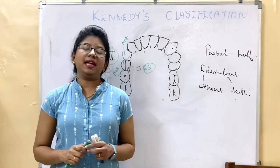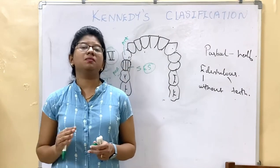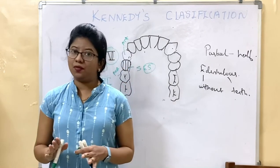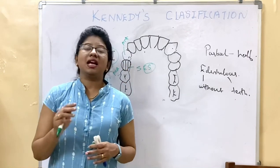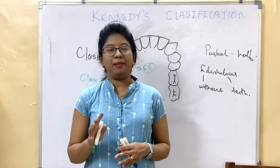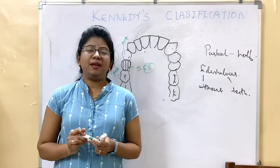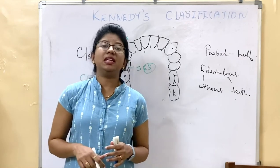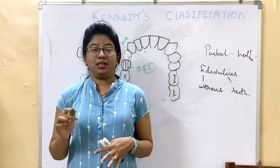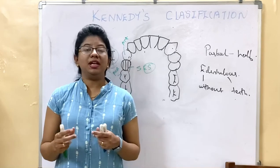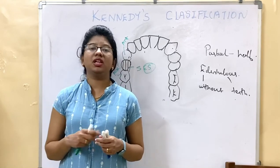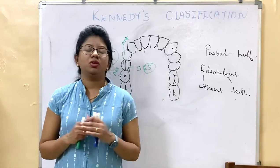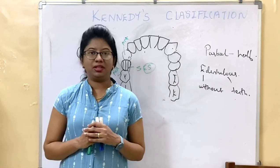Kennedy's classification plus Applegate's modification includes Class 1, Class 2, Class 3, Class 4, Class 5, and Class 6. Class 5 and Class 6 are given by Applegate. In this lecture, I have explained Kennedy's classification in short. In the next lecture, we will see Applegate's rules, which help us in determining Kennedy's classification easily. Thank you so much.